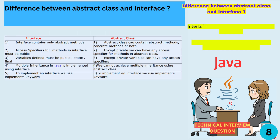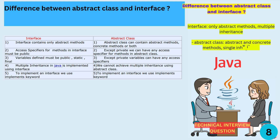An interface only has abstract methods, while an abstract class can have abstract and concrete methods. The methods in an interface are always public, while abstract classes can have methods with different access modifiers. The variables in an interface must be public, static, and final, while the variables in an abstract class can have other access modifiers. Multiple inheritance is implemented using interfaces, not abstract classes.